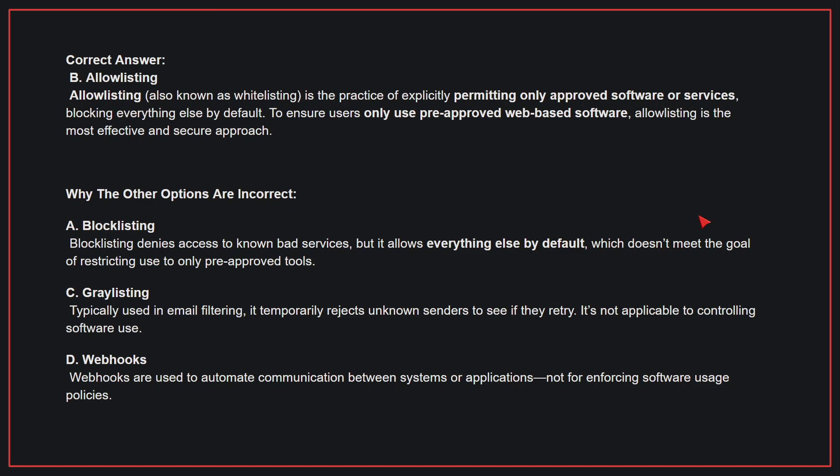Why the other options are incorrect? A. Block listing denies access to known bad services, but it allows everything else by default, which doesn't meet the goal of restricting use to only pre-approved tools. C. Gray listing is typically used in email filtering — it temporarily rejects unknown senders to see if they retry. It's not applicable to controlling software use.